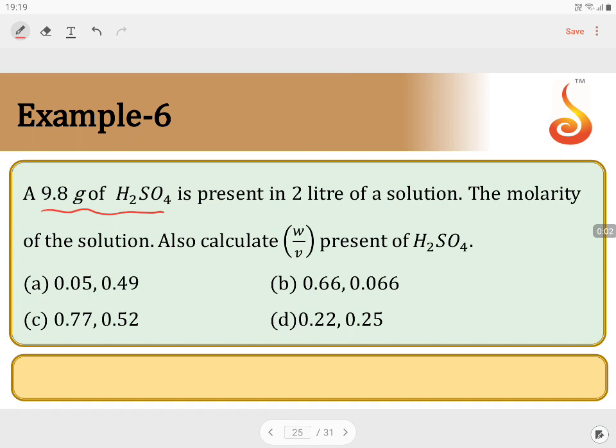9.8 grams of H2SO4 is present in 2 liters of solution. Find the molarity of the solution. Also calculate weight by volume percentage of H2SO4 present. So first we have to find molarity for 9.8 grams of H2SO4.